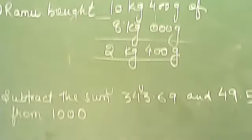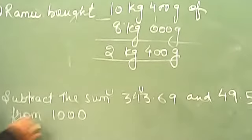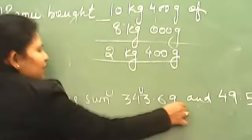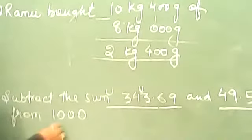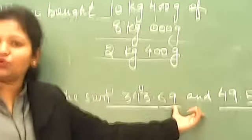The question number 2 which I gave you, that type of question generally comes in exam. In this question, what is given? You have to subtract the sum of this and this from this one. So it means you will add these two.